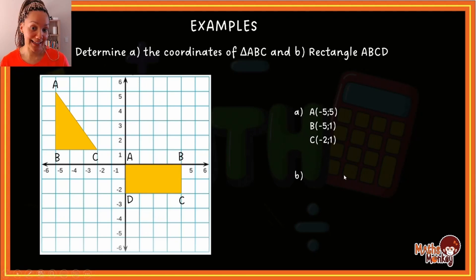Okay, the points of triangle ABC. Now let's try the rectangle. Again, the rectangle also has ABCD. So let's have a look. If I look at A, now we learned in the previous slide that A is literally the point where the x and the y-axis meet. This is 0. So A's point is (0, 0).